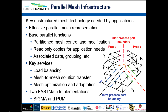For a parallel mesh infrastructure, we need the mesh distributed across nodes, across cores on nodes, and to accelerators. We need base parallel functions such as how to partition the mesh and control it as the mesh and partitions change, and support ghosting. How do we associate data with the mesh? Key services are dynamic load balancing, mesh-to-mesh solution transfer, mesh optimization, and adaptation. There are two FastMath implementations of a parallel mesh infrastructure: SIGMA, which Vijay will talk about, and PUMI.